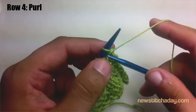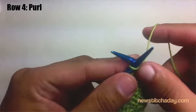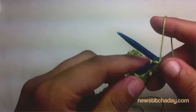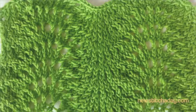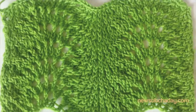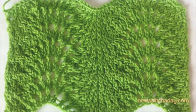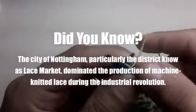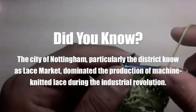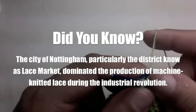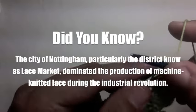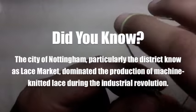Row four: purl all stitches. Repeat rows one through four until you have reached your desired length. After a few repeats your pattern should look like this. Did you know the city of Nottingham, particularly the district known as Lace Market, dominated the production of machine knitted lace during the industrial revolution?